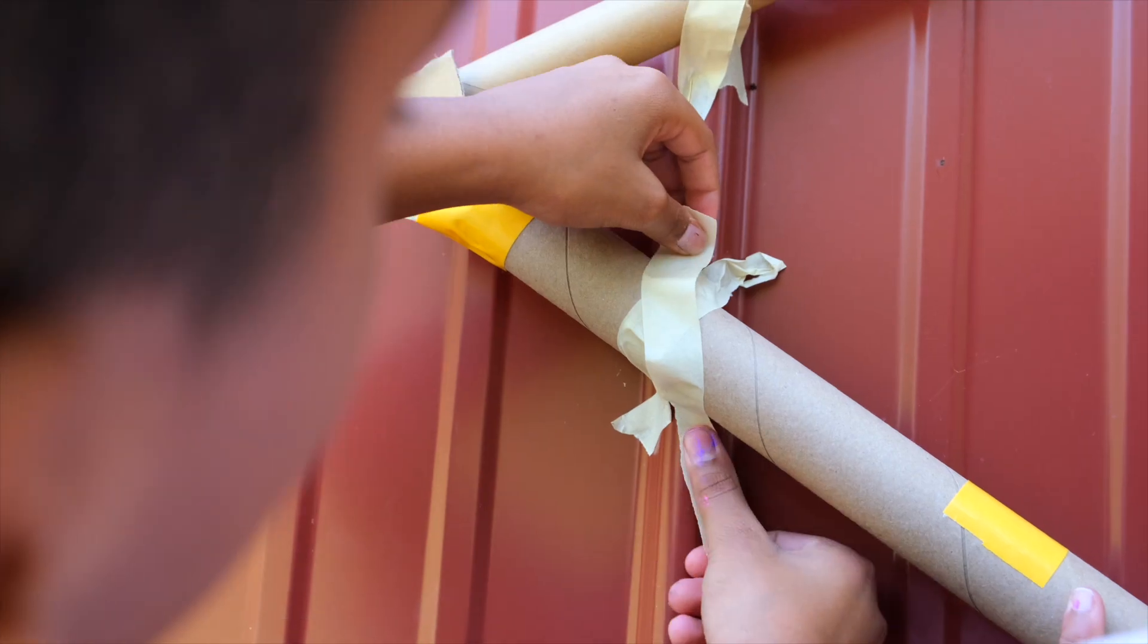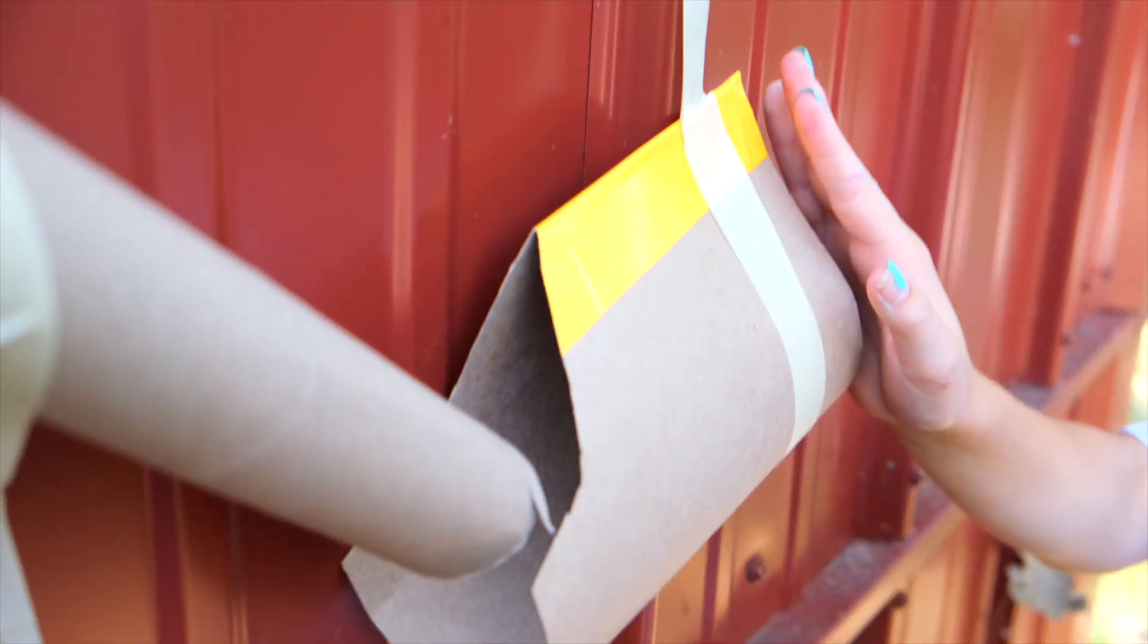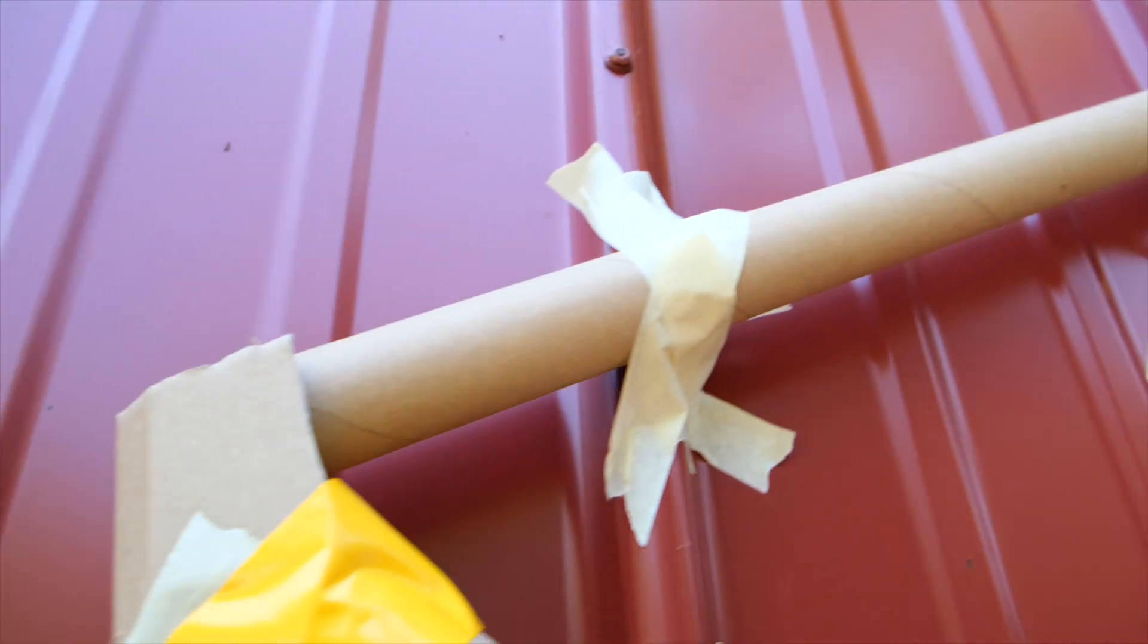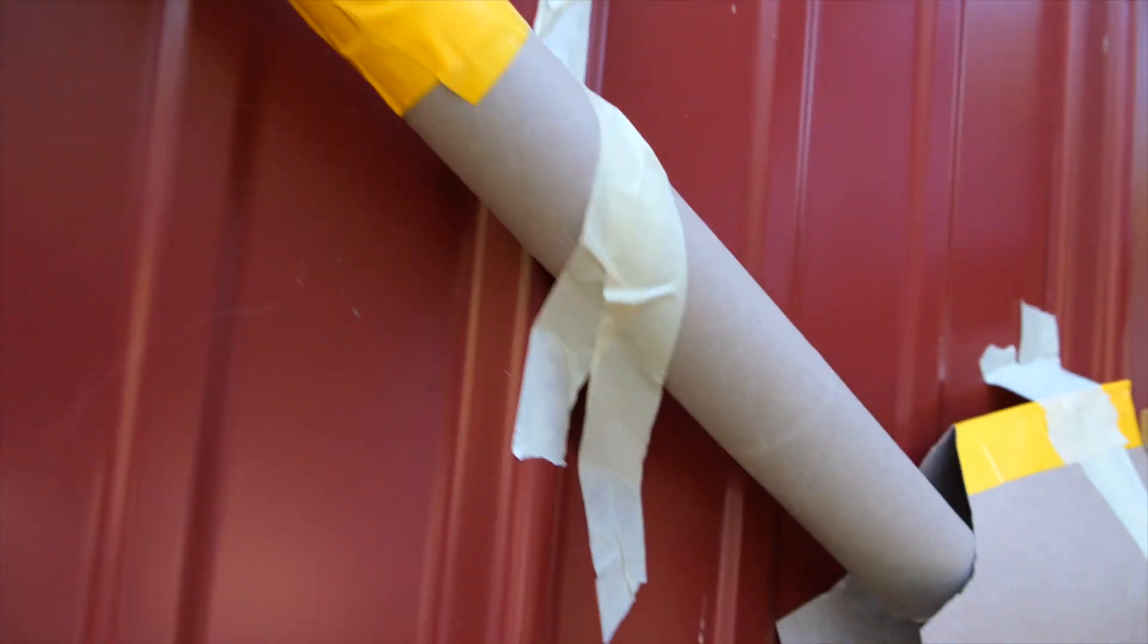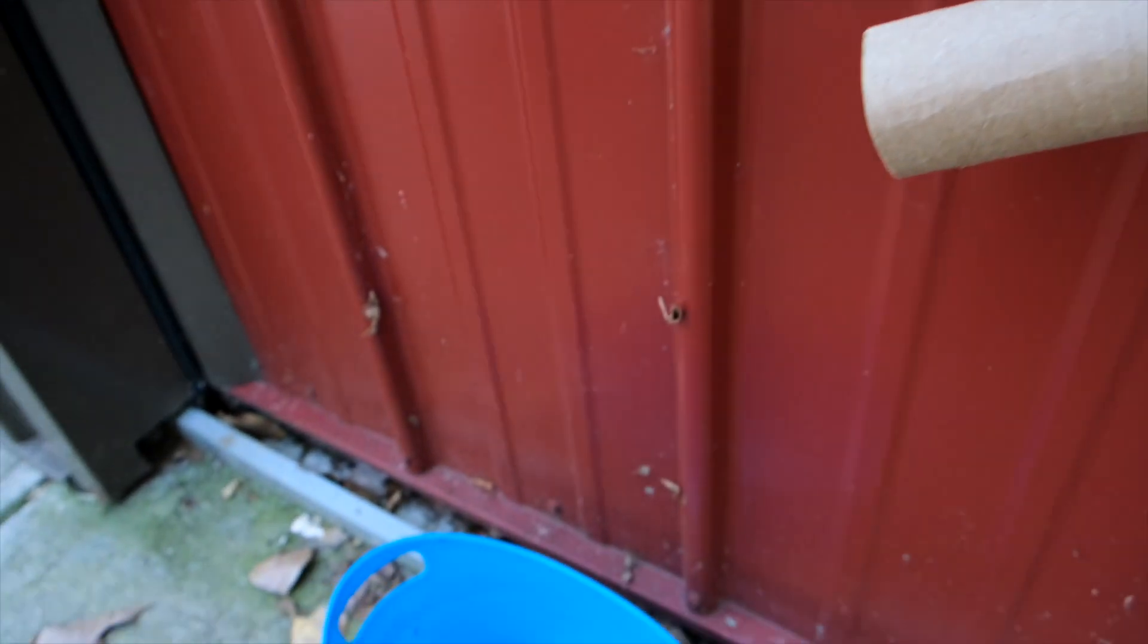The next step is to tape the cardboard tubes and pieces into the position you want. So when the ball is released at the top, it'll roll down the tubes or ramps all the way to the bottom. For their ball run, the STEM kids decided to tape the tubes and cardboard parts to the wall and have the ball land in a blue bucket at the bottom.